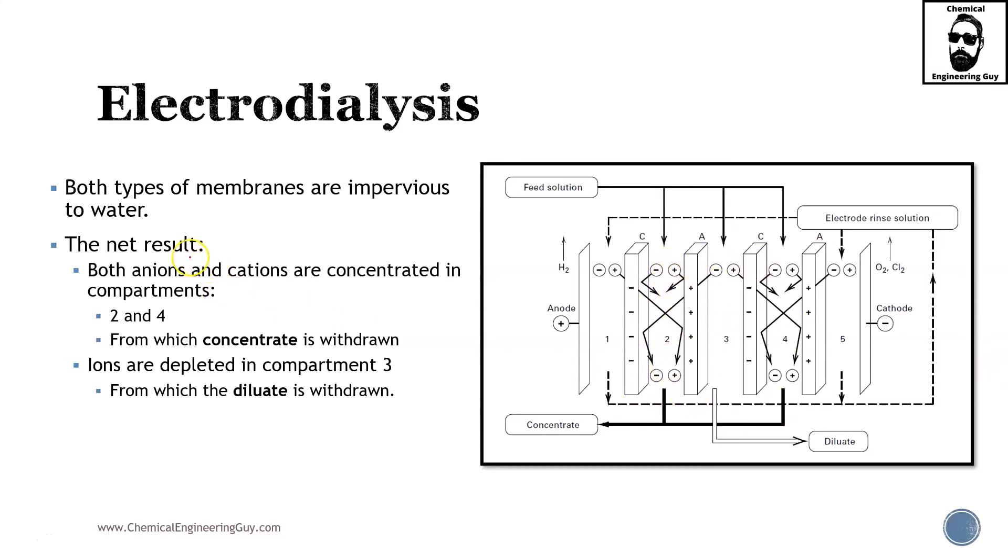The net result is that both anions and cations are going to be concentrated in the compartments of the concentrated flows—that will be number two and number four—meaning that the dilutes, or the materials that are low in concentration of ions, will be one, three, and five.